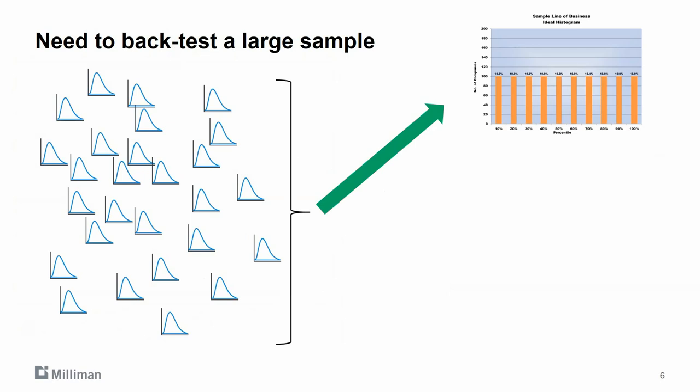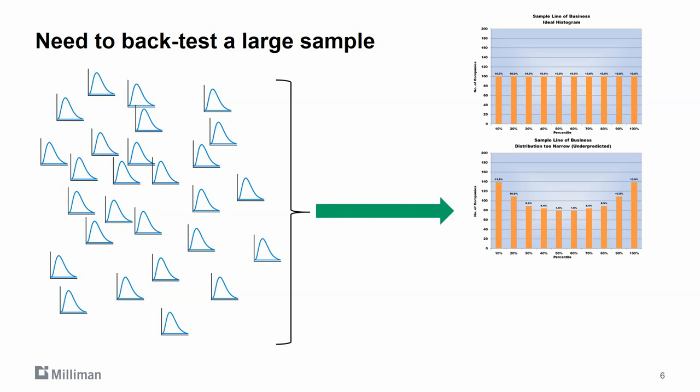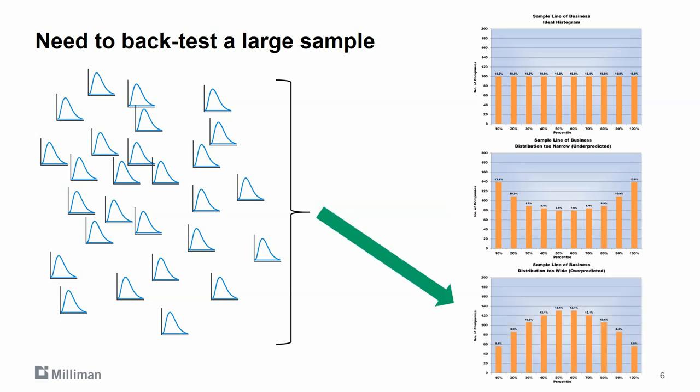If the distributions are reasonable, then the outcomes should accurately predict all percentiles. If the estimates are underpredicting, we will see too many outcomes in the low and high percentiles. Conversely, if the estimates are overpredicting, we will see too few outcomes in the low and high percentiles.